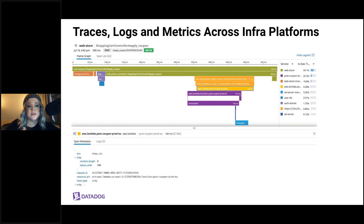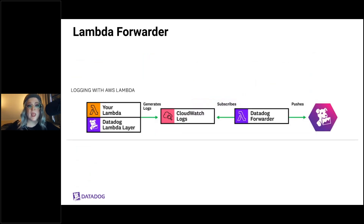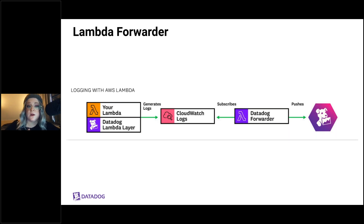For logs, Datadog's Lambda layer automatically forwards CloudWatch logs to the forwarder, which then pushes them to Datadog. The forwarder can also send logs and other telemetry such as Amazon S3 events and Amazon Kinesis data stream events. Deploying the forwarder via CloudFormation is recommended, as AWS will automatically create the Lambda function with the appropriate role and add relevant tags like function name, region, and account ID.